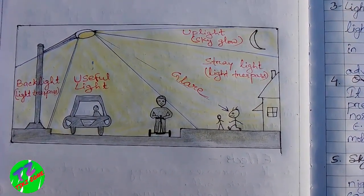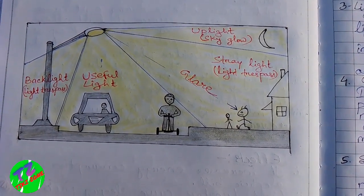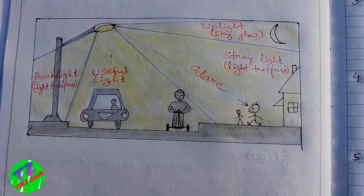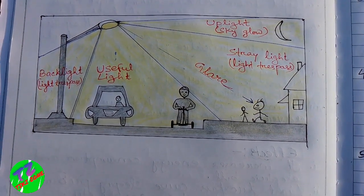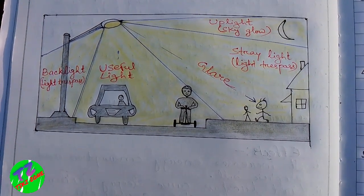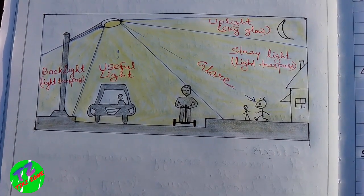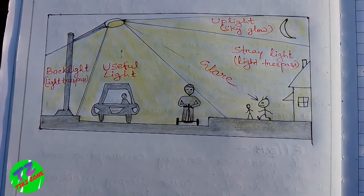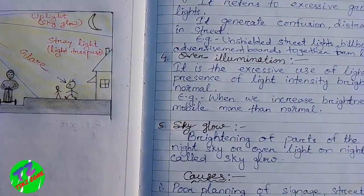Here is a diagram which shows the different types of light pollution. There is a street light whose function is to provide light to the street — this is the useful light. The back light is a type of light trespass. The up light, which faces towards the sky, forms sky glow. The light which enters one's property is stray light, also a type of light trespass. The light which causes visual impairment to people is glare.